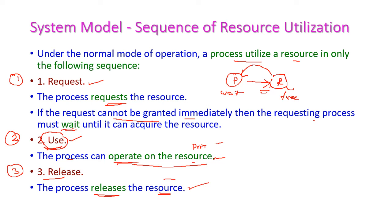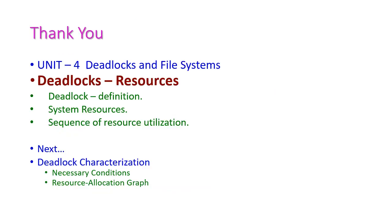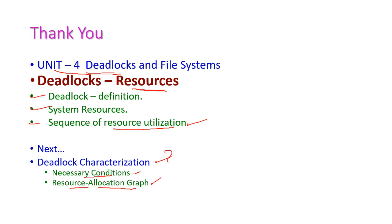Up to this point, we have seen the resources in the computer system, which comes under the fourth unit on deadlocks. In this class, we have seen the deadlock definition, system resources, and the sequence of resource utilization. In the next class, we will see deadlock characterization, the necessary conditions for deadlock, and the resource allocation graph. Thank you.